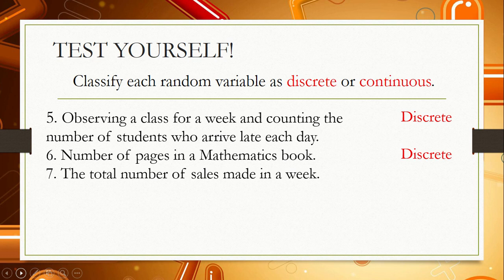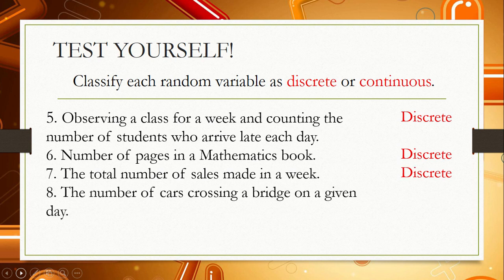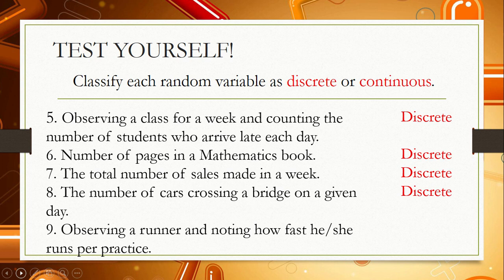Number 7: the total number of sales made in a week. This is also a discrete random variable. Number 8: the number of cars crossing a bridge on a given day. This is also a discrete random variable.